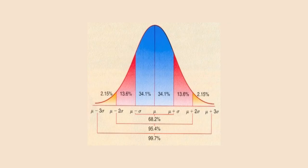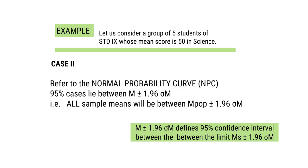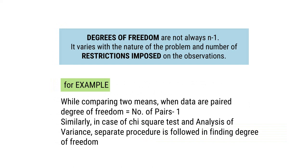Referring to the normal probability curve, 95% of cases lie between M plus or minus 1.96 sigma-m, and all sample means will be between the population mean plus or minus 1.96 sigma-m. Remember, degrees of freedom are not always n minus 1 — it varies with the nature of the problem and the number of restrictions imposed on the observations.